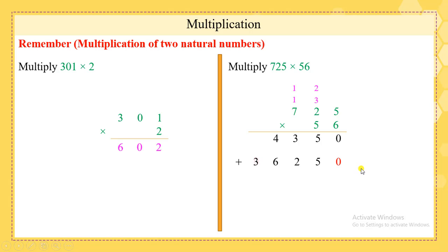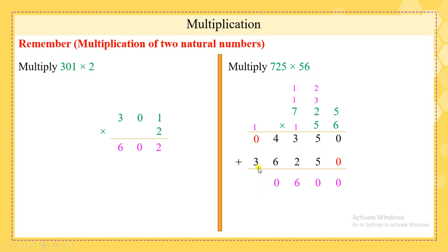Now add these two products. Put 0 in the empty place. 0 plus 0 is 0; 5 plus 5 is 10 — put 0 here and 1 above the 3. Now 3 plus 2 is 5, plus 1 is 6. 4 plus 6 is 10 — put 0 here and 1 above. 0 plus 3 is 3, plus 1 is 4. Our product is 40,600.